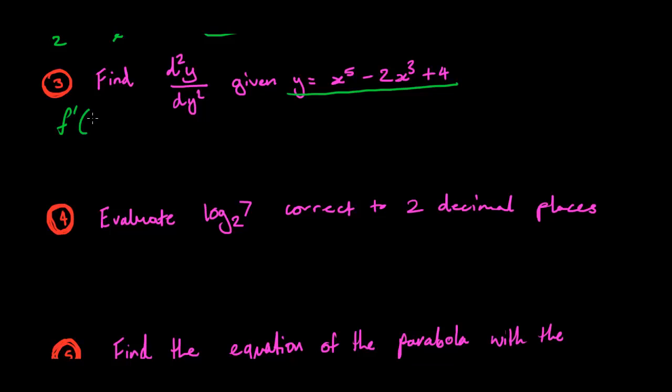So f'(y) equals 5x⁴ - 6x²... Oh, that goes away. And then for the second differentiation, we get 20x³ - 12x. That's pretty much it. That should be your answer. And as I can see on the sheet itself, the answer is d.